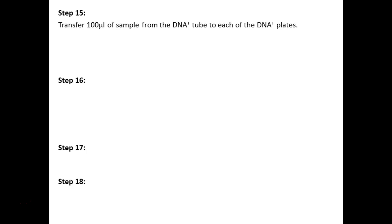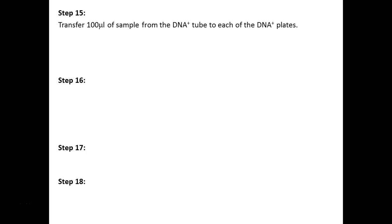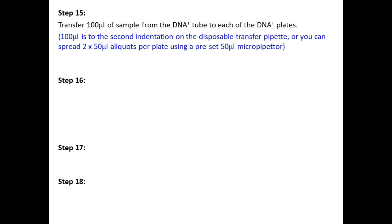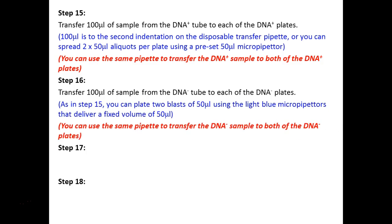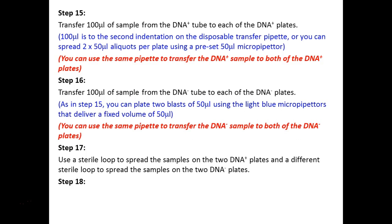Everyone will get to use those little fixed-volume blue pipettes — you'll definitely use them again next week since there's a lot of pipetting. Positive tube contents go onto positive plates; negative tube contents go onto negative plates. Use a sterile loop for both positive plates and a different sterile loop for the two negative plates to avoid cross-contamination.